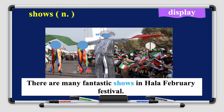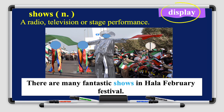The next word is 'shows' — it's a noun. Its synonym on the right is 'display.' A show can be a radio, television, or stage performance. Let's read the sentence: there are many fantastic shows in Hala February festival — in this picture you can see people watching the show and having fun.